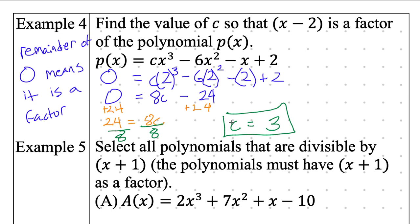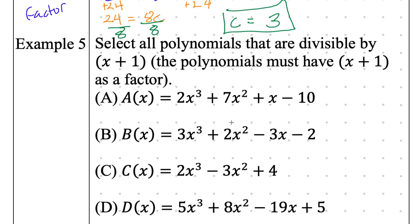Example 5 is the last and most lengthy type of problem. We need to select all polynomials that are divisible by x plus 1. Another way of asking that is: select all polynomials that have x plus 1 as a factor. These are two ways of asking the same question. If I plug in what value, I will have a remainder of what? It's very similar to example number 4.